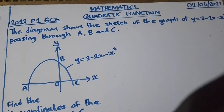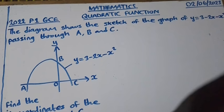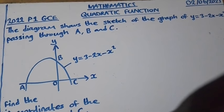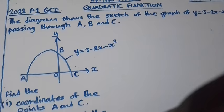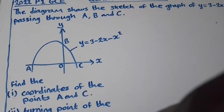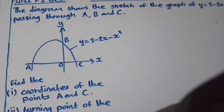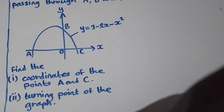The diagram shows the sketch of the graph of y = 3 - 2x - x², passing through points a, b, and c. Part a: find the coordinates of the points a and c. Question 2: find the turning point of the graph.